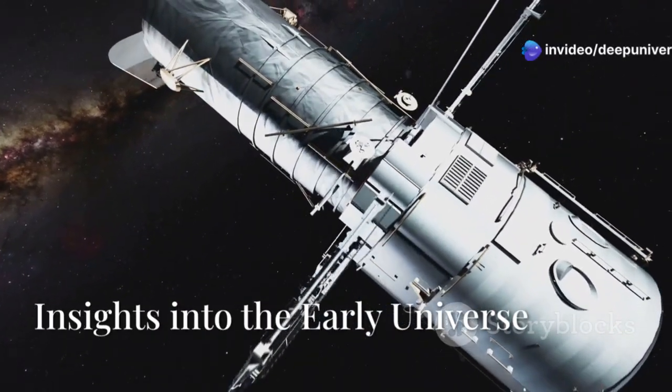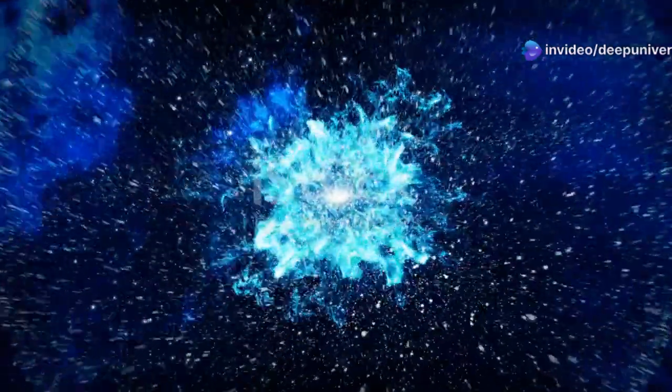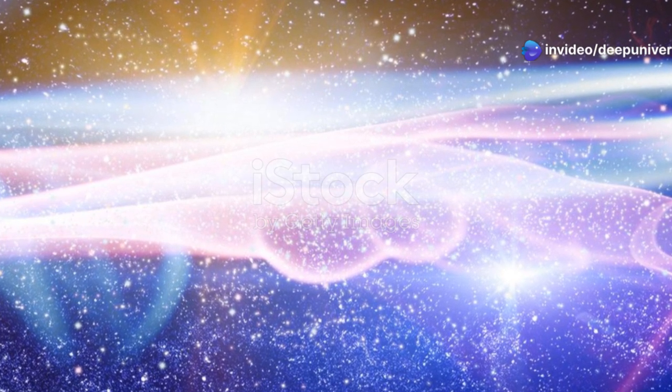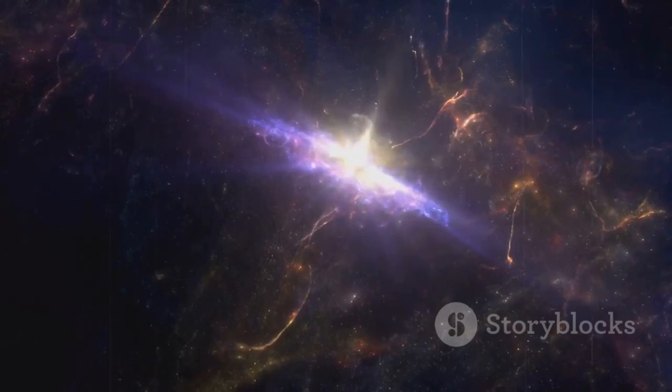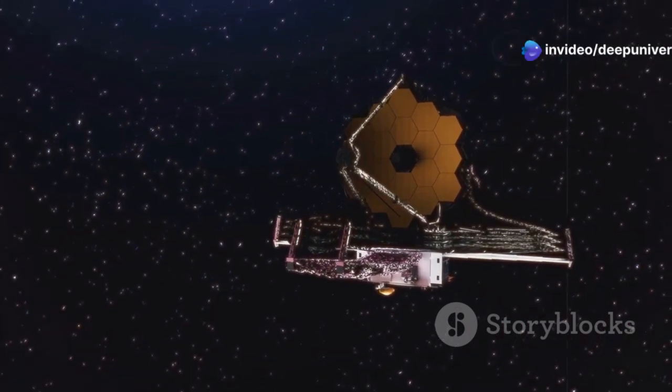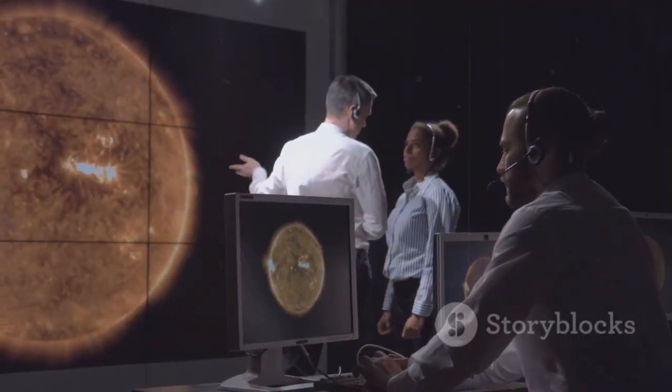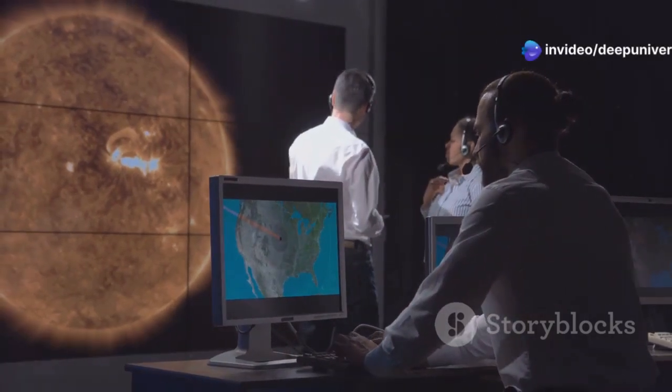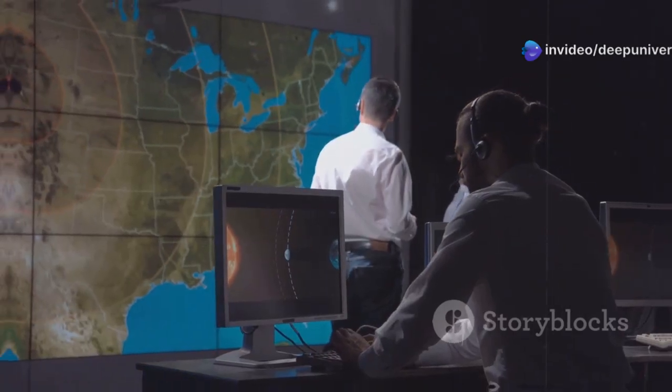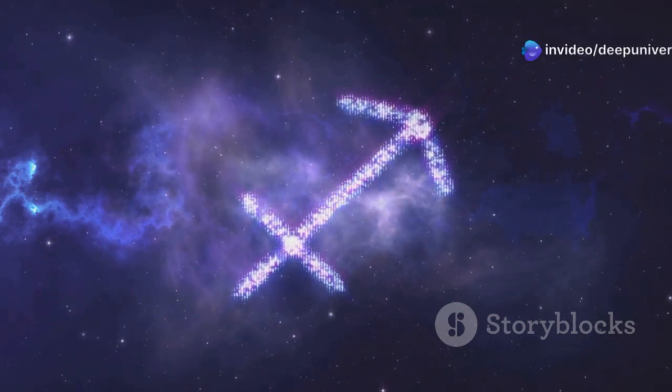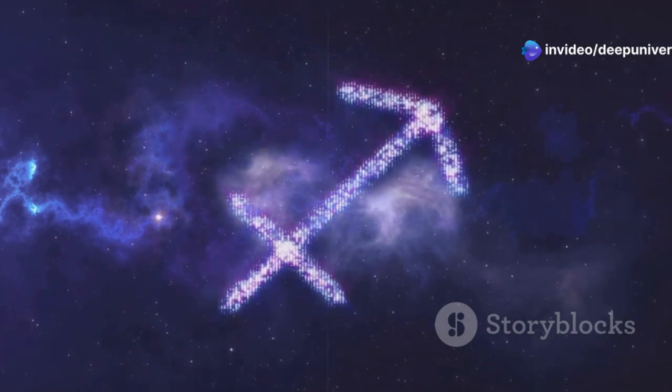The James Webb Space Telescope, or JWST, is also providing us with new insights into the Big Bang, the event that created the universe. This monumental event, occurring approximately 13.8 billion years ago, set the stage for everything we observe in the cosmos today. The telescope is able to detect the faint afterglow of the Big Bang, known as the Cosmic Microwave Background Radiation. This radiation is a crucial relic from the early universe, offering a snapshot of the cosmos when it was just 380,000 years old. By studying this radiation, astronomers can learn about the conditions in the very early universe. They can analyze temperature fluctuations and density variations that eventually led to the formation of galaxies and other cosmic structures. JWST's observations are helping to refine our understanding of the Big Bang, and the processes that led to the formation of the universe as we know it. These observations are crucial for piecing together the complex puzzle of our cosmic origins.